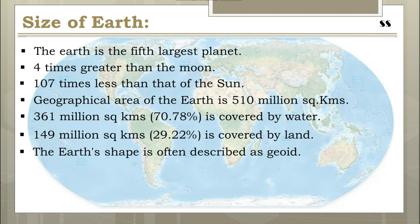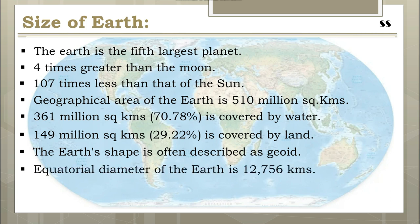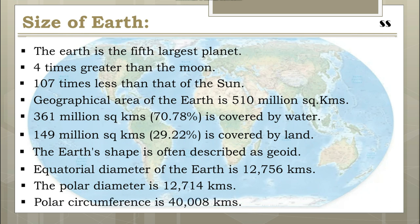The Earth's shape is often described as geoid, which literally means 'the shape of the Earth,' or oblate spheroid, which means the Earth is flattened at the poles and bulges at the equator. You can refer to the image in the background. The equatorial diameter of the Earth is 12,756 kilometers and the polar diameter is 12,714 kilometers. The equatorial circumference is 40,076 kilometers and the polar circumference is 40,008 kilometers. The difference of 42 kilometers in diameter is proof of the geoid shape of the Earth.